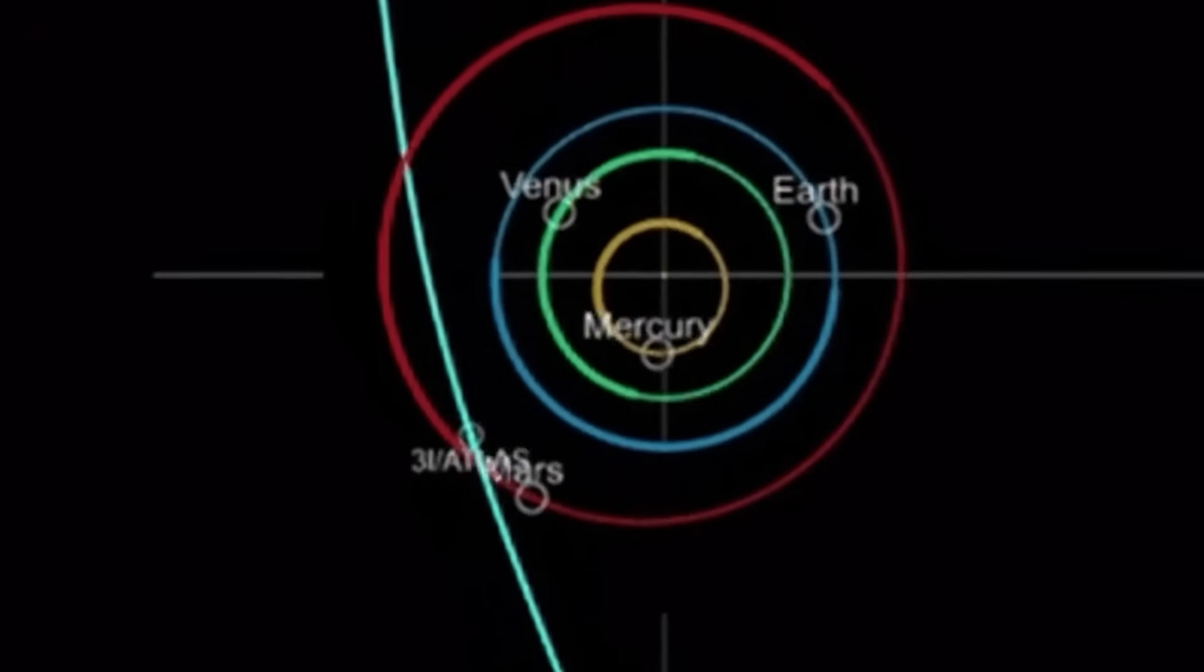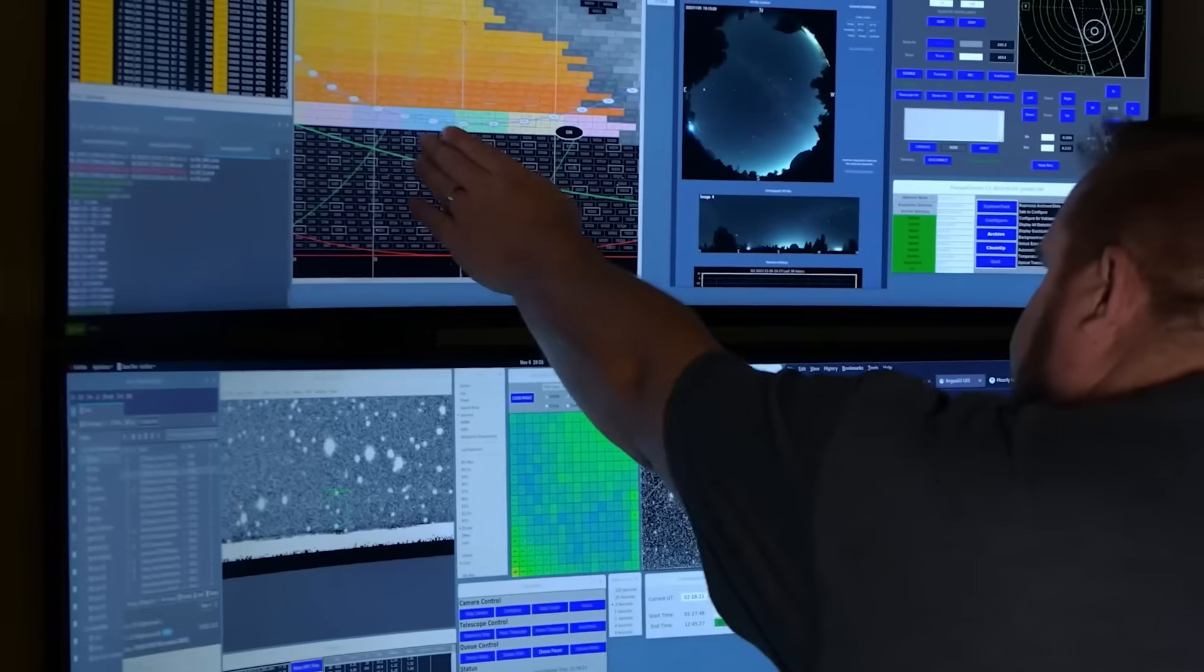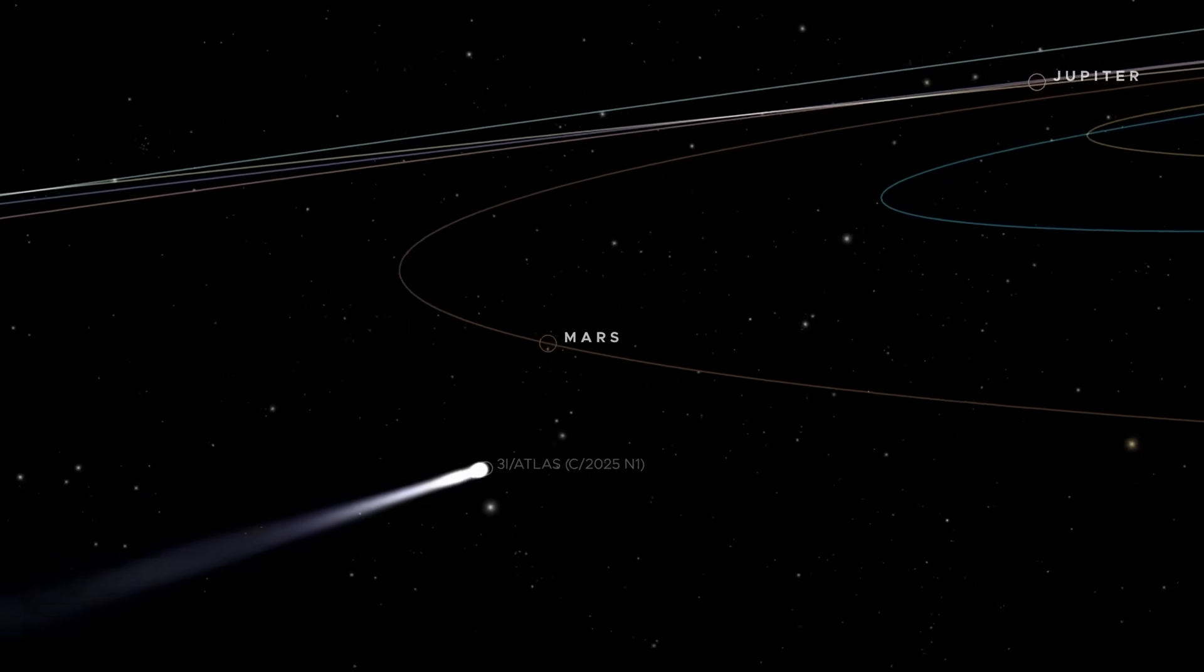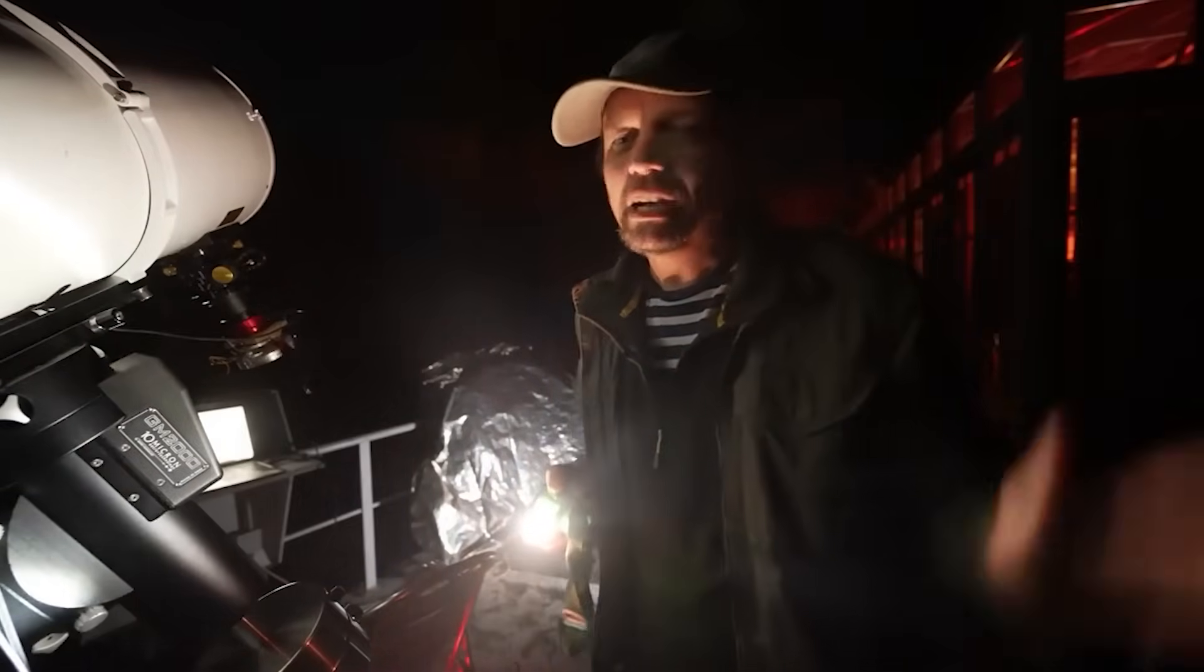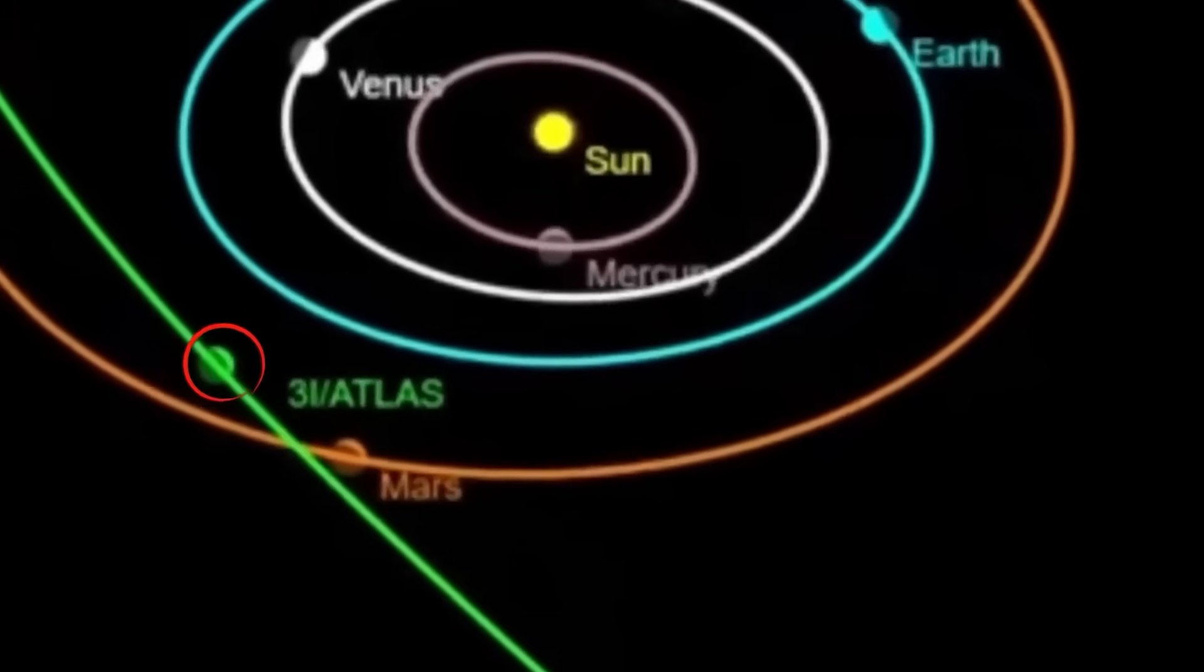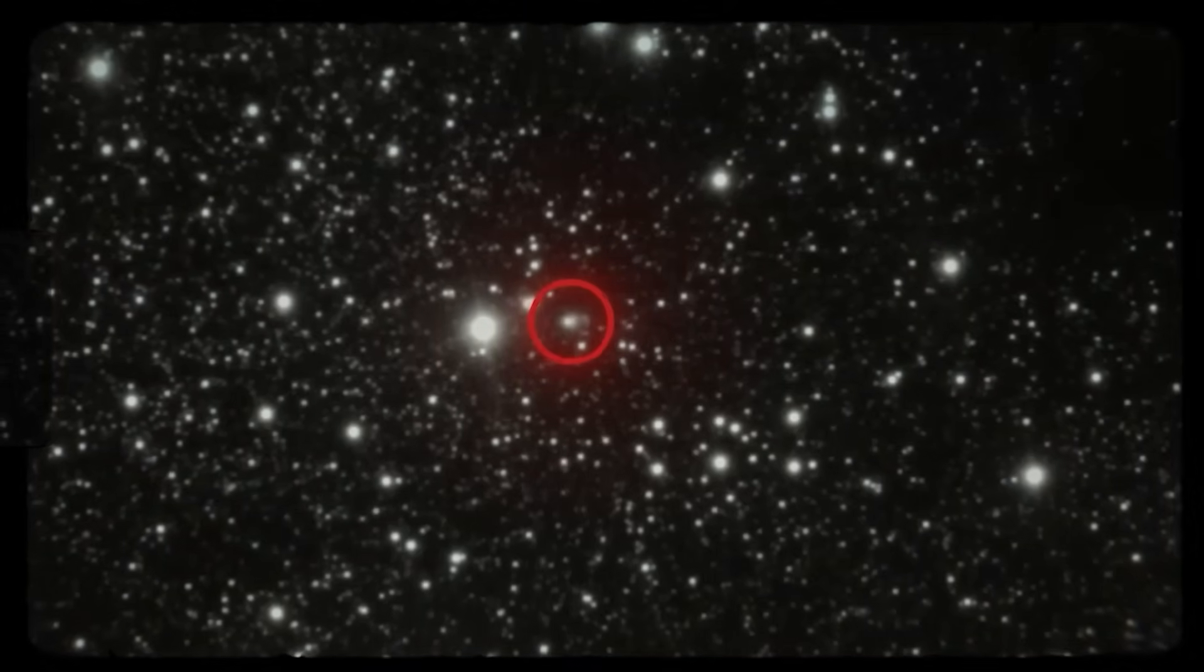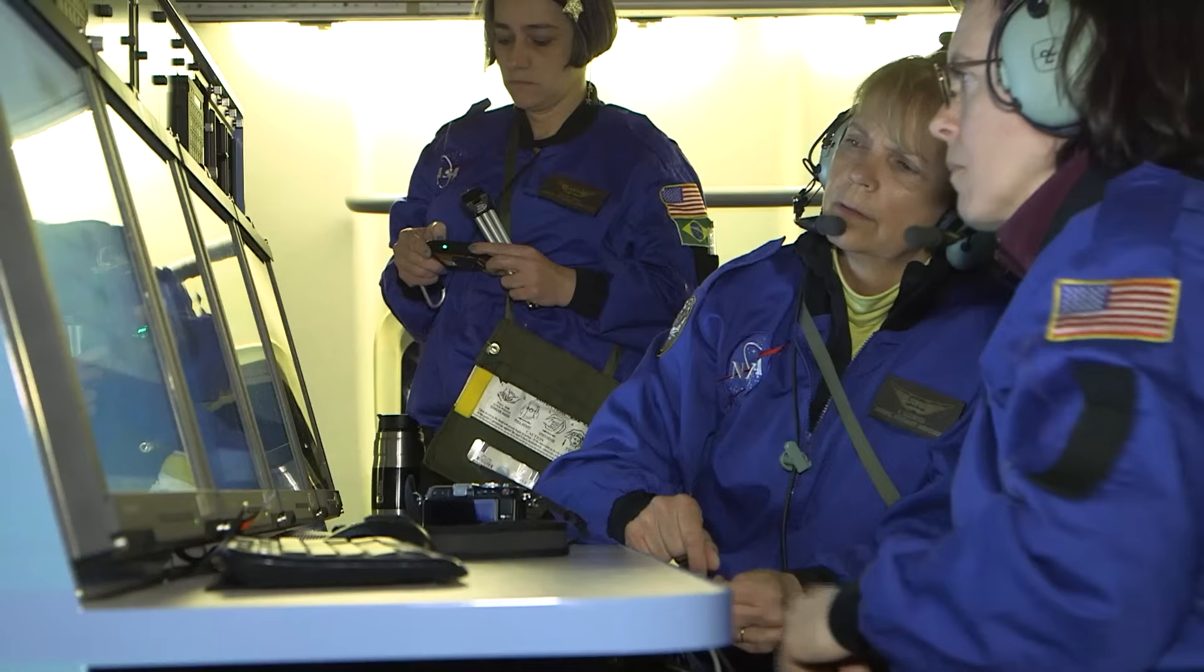But now, with Three-Eye Atlas in range, the mystery of Oumuamua came rushing back, not because this new object resembled it, but because it surpassed it in every metric. Larger, slower, more stable, and clearly deliberate. Some began to suspect that Oumuamua wasn't a scout. It was a probe, a passive reconnaissance device. But Three-Eye Atlas, this wasn't passive. This was interactive. This was observing us as we observed it. This was the second phase, like the difference between a radar ping and a drone. And if that's true, then we must ask the question no one dares say out loud. What is coming next?